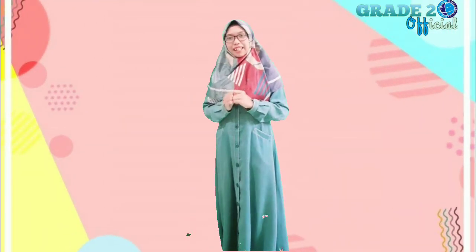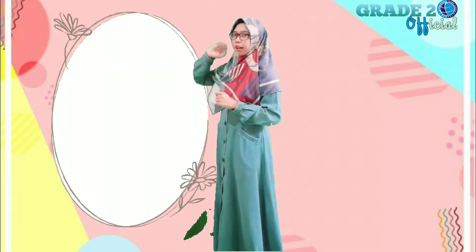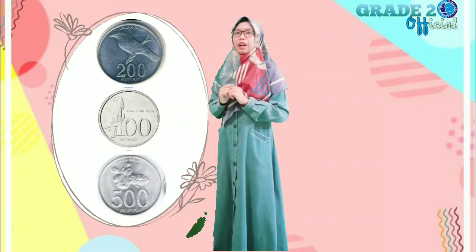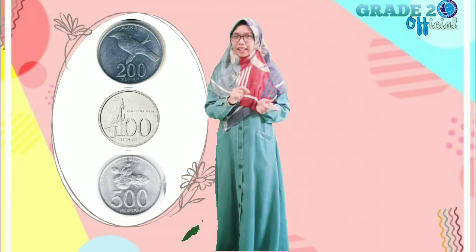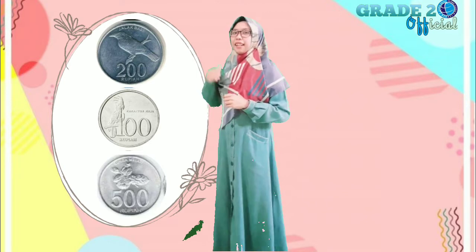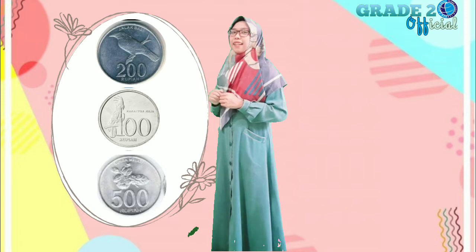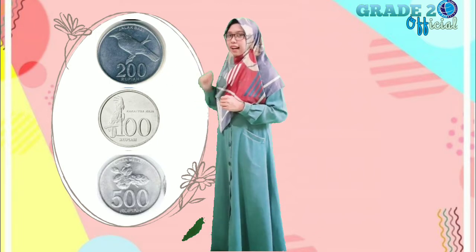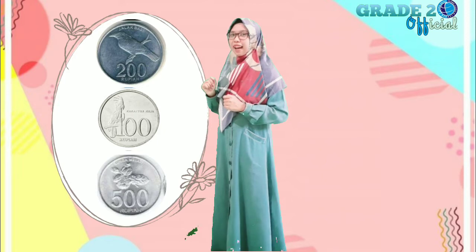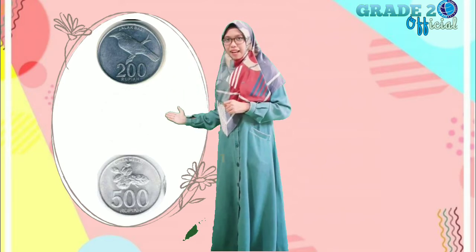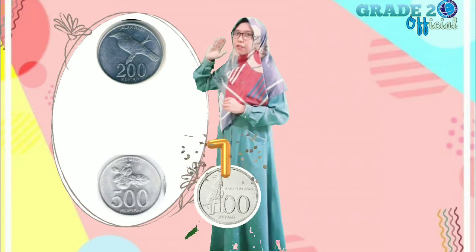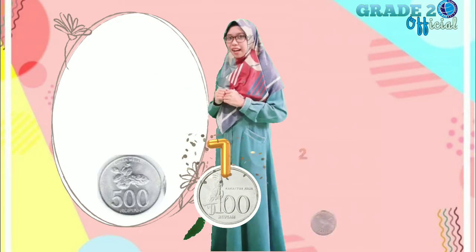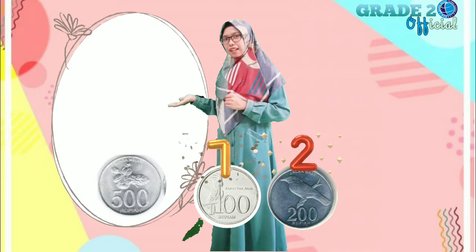Selanjutnya, kita akan belajar mengurutkan nilai pecahan uang. Di sini, Miss Menuh punya gambar 200 rupiah, ada 100 rupiah, dan ada 500 rupiah. Yuk teman-teman, kita urutkan nilai nominal dari yang paling kecil ke yang paling besar. Teman-teman bisa lihat angka depannya dulu — ada angka 2, ada angka 1, dan angka 5. Yang paling kecil adalah 100 rupiah. Selanjutnya 200 rupiah, dan yang terakhir ada 500 rupiah.